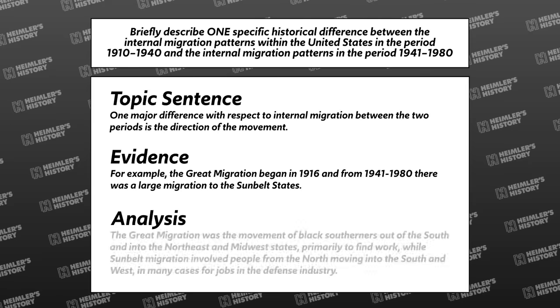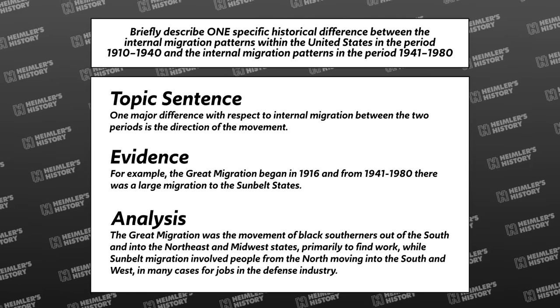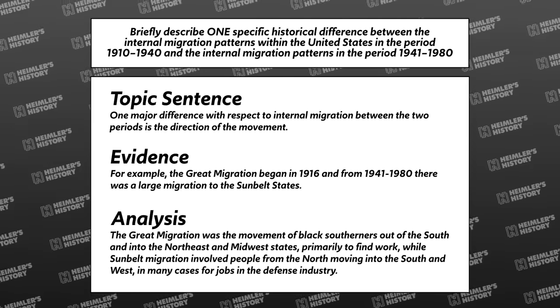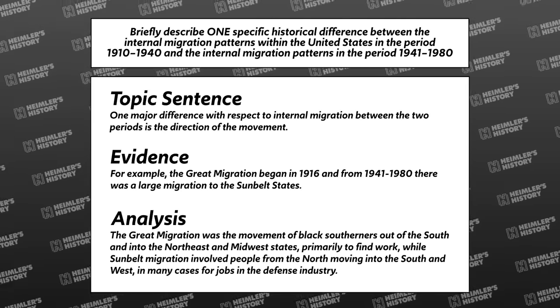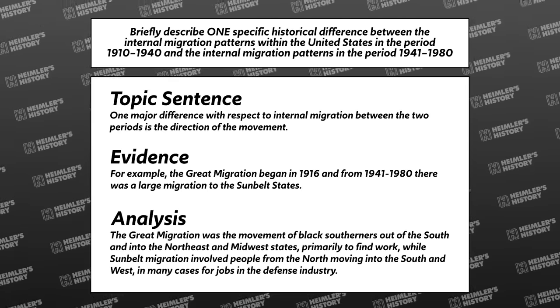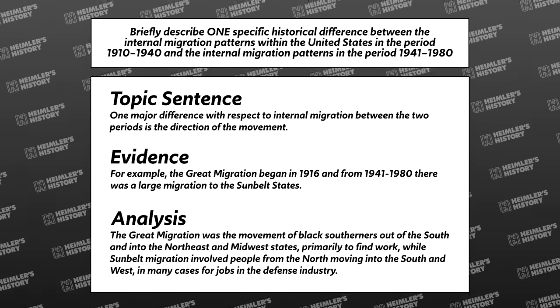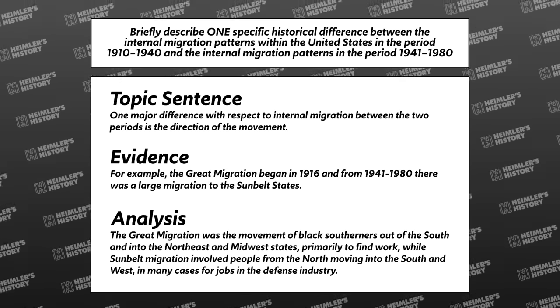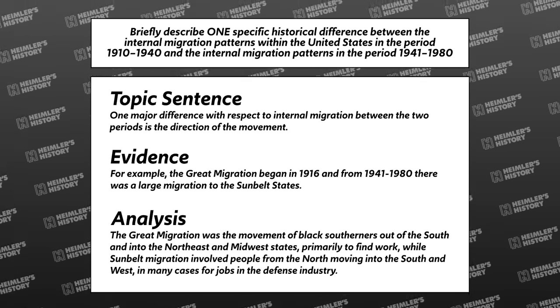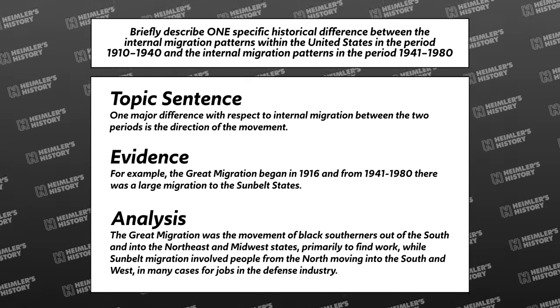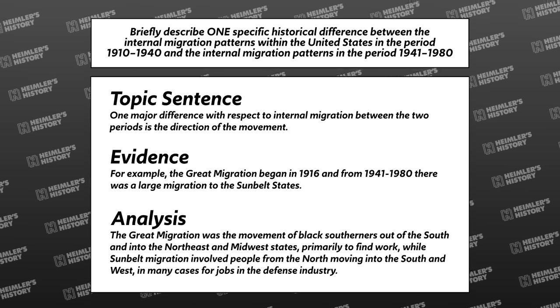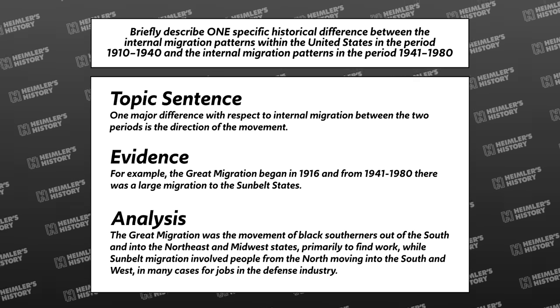Analysis: 'The Great Migration was the movement of Black Southerners out of the South and into the North, East, and Midwest states, primarily to find work, while the Sunbelt Migration involves people from the North moving into the South and West, in many cases for jobs in the defense industry.' And that's it — T, E, A — and it'll work on nearly every response that you have to give.